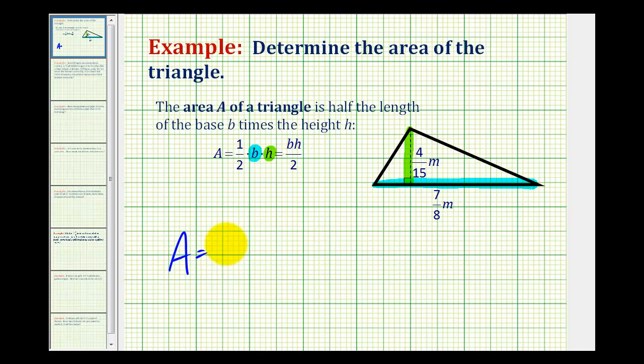So our area is going to be equal to 1 half times 7 eighths of a meter, and I'm going to go ahead and include the units, and I'll show you why at the end, times the height, which is 4 fifteenths of a meter.